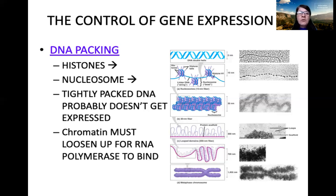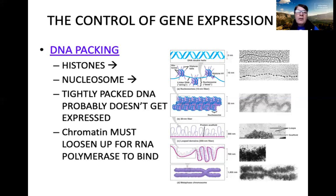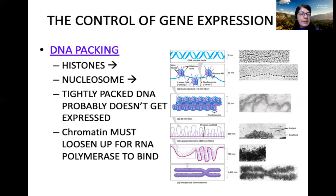Histones, nucleosomes, the tight packaging of DNA is really a barrier to anything that must happen to DNA. So chromatin is in constant flux — it's constantly being remodeled so that proteins that need access to DNA can access it and do their job. We're going to specifically focus on transcription, but chromatin modifications and chromatin remodeling are important for other processes as well. The more tightly packaged DNA is, the less likely it is to be expressed, and the more loosely packaged it is, the more likely it will be expressed.